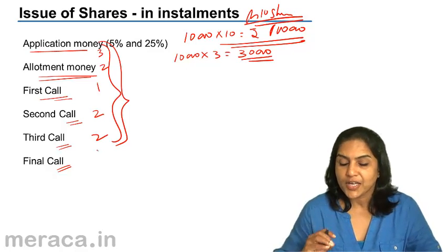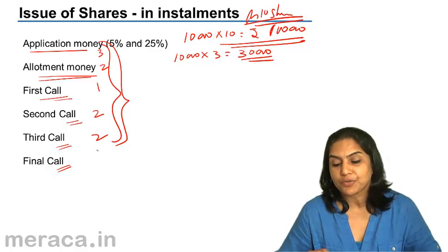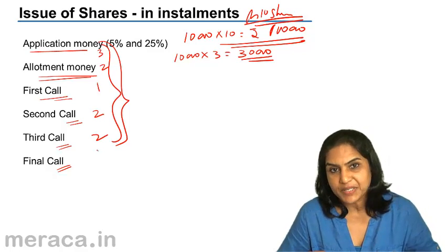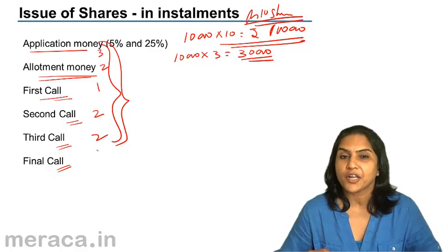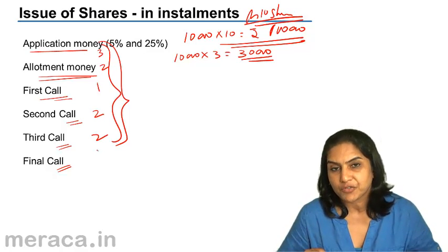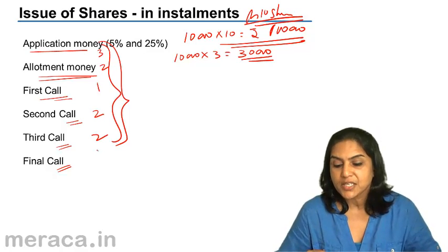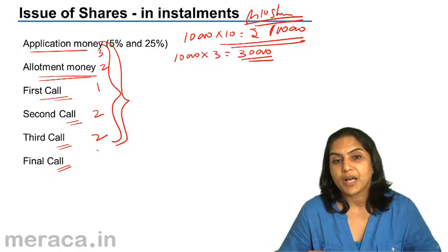According to the Companies Act, application money should be at least 5% of the issue price. But according to the SEBI guidelines, 25% of the issue price should be called up along with the application.